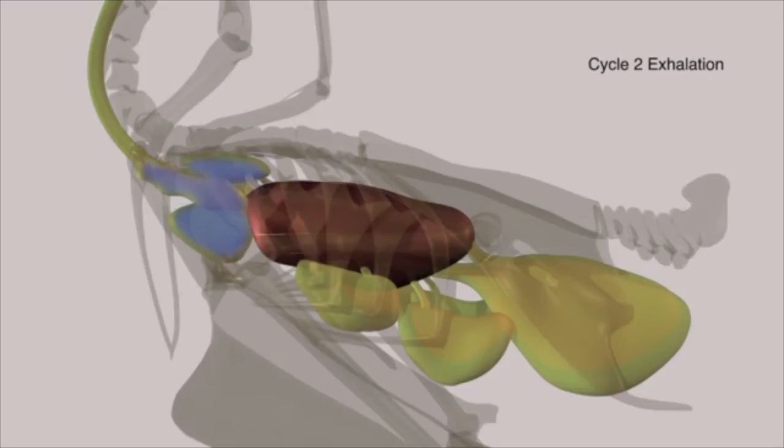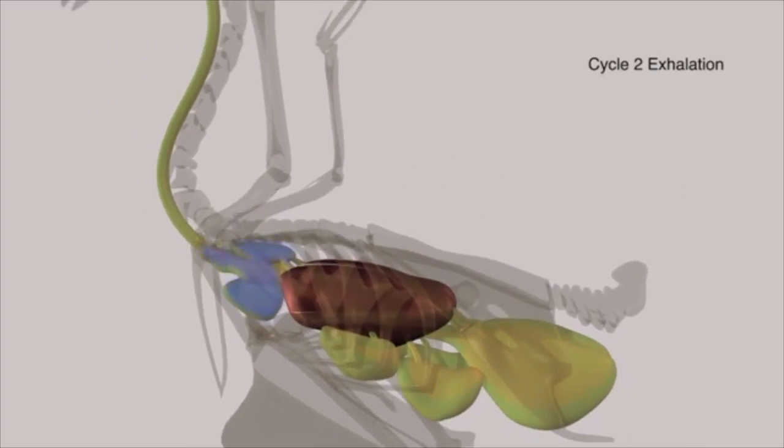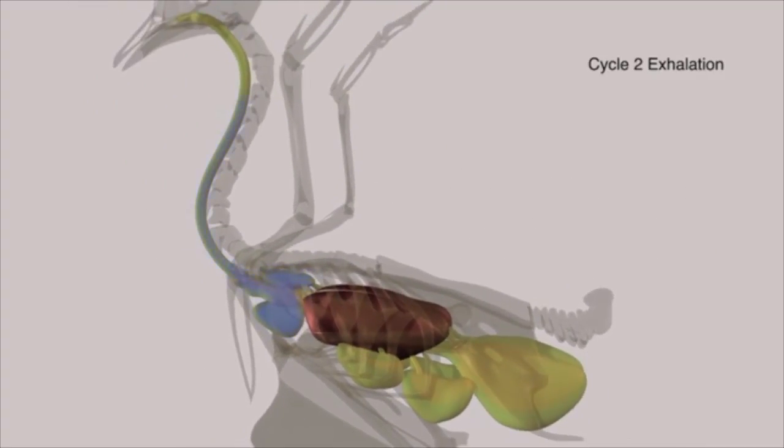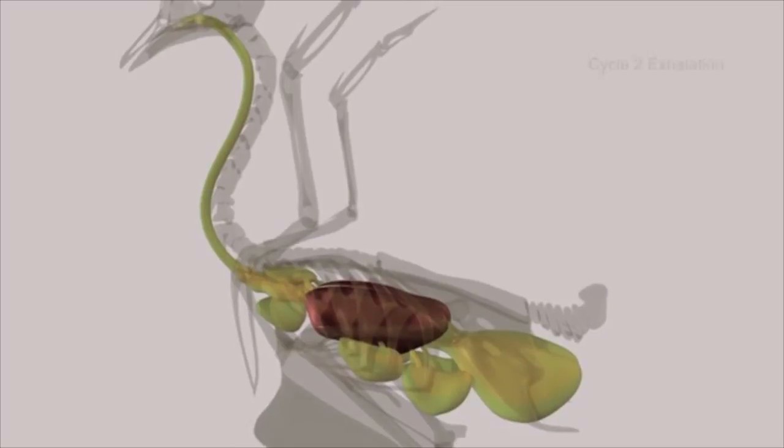During the second exhalation, the anterior sacs contract and the air is then driven out into the trachea where it passes up and out of the nostrils.